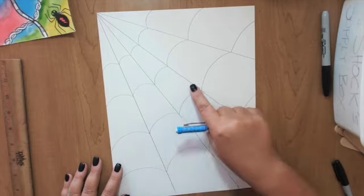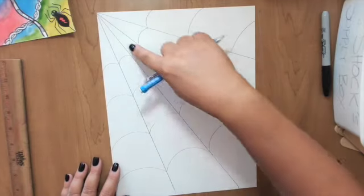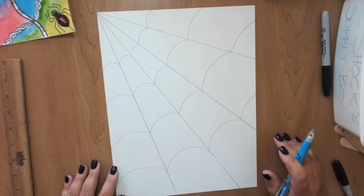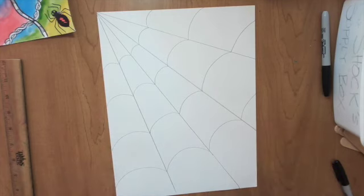All right. So, I've got one, two, three, four diagonal lines. And one, two, three, four of these lines for the cross section.